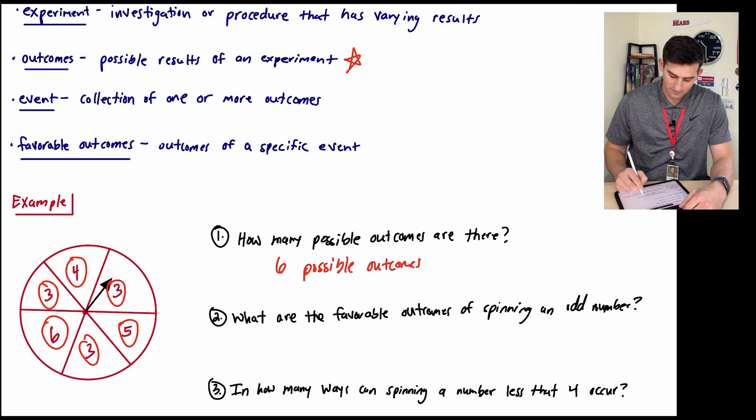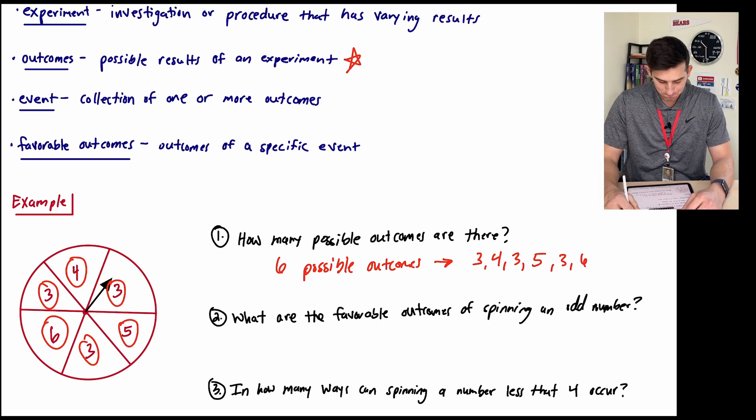Those six outcomes are 3, 4, 3, 5, 3, or 6. So we have six possible outcomes there.